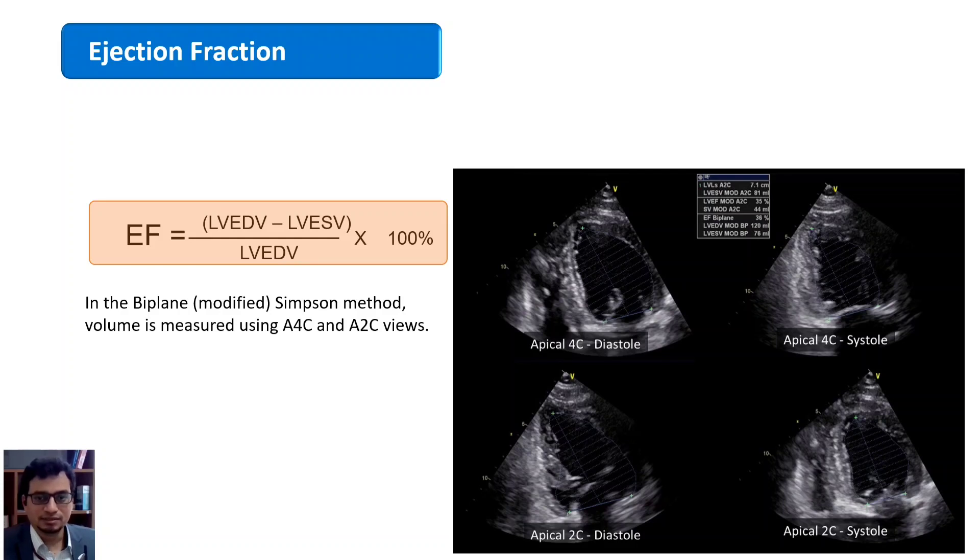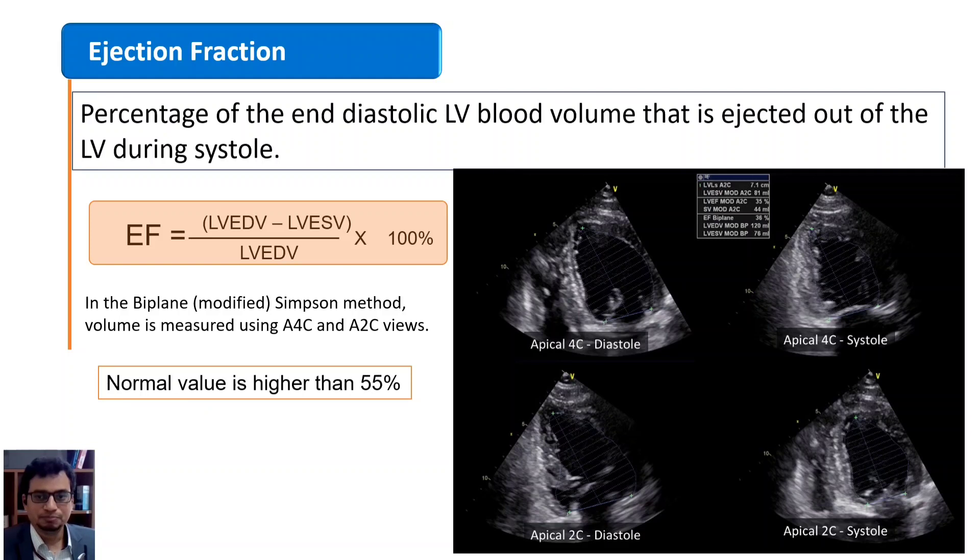That's why the scientists came up with the idea of volume estimation. LV ejection fraction is the central measure of the LV systolic function. By definition the ejection fraction is the percentage of end diastolic LV blood volume that is ejected out of the LV during systole. The ejection fraction is calculated by dividing the stroke volume by end diastolic volume. The stroke volume is the difference between end diastolic and end systolic volume.